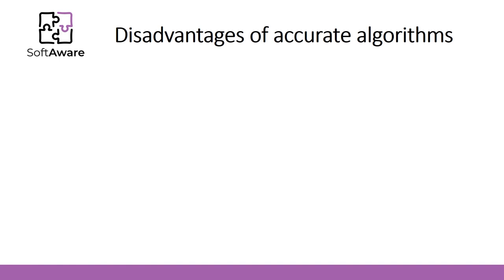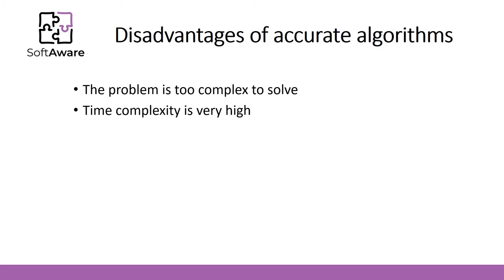Before we start, let's take a look at why heuristic or probabilistic algorithms were designed. Disadvantages of accurate algorithms: sometimes the problem is so complex that algorithms can't solve it directly and find the exact solution — for example, a chess game. In other cases, the program can be compiled but the time complexity is very high and this program can't be used in practice. Memory usage can also be very high to speed up the algorithm, and sometimes a computer is not capable of executing the code.